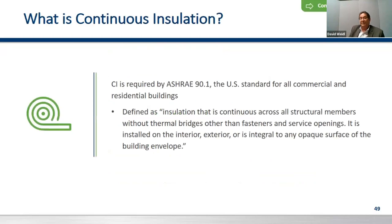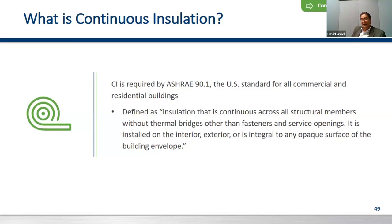On continuous insulation: ASHRAE 90.1 is the U.S. standard, and for all commercial and residential buildings it's defined as insulation that is continuous across all structural members without thermal bridging. That's open to interpretation and some jurisdictions have taken it further than others, but it's here to stay — and I'd expect the next code cycles to increase the requirements as well.